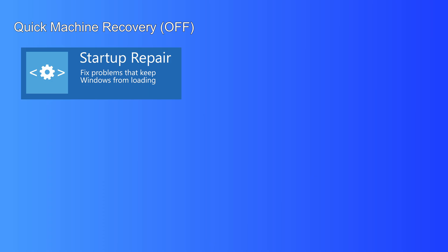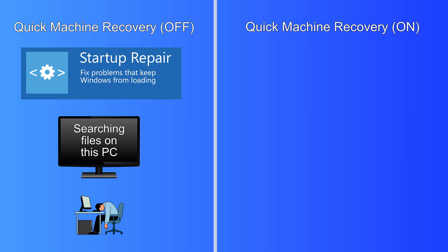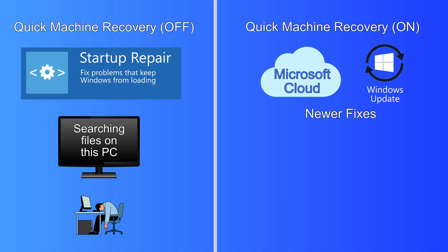So they both sound quite similar. So what's the real difference between Startup Repair and Quick Machine Recovery? Well, with Quick Machine Recovery turned off, Windows Startup Repair is used, which only has access to the files on your computer to try and fix a Windows bootup problem. This can fix problems, but often doesn't, and may leave you feeling frustrated. Whereas with Quick Machine Recovery turned on, it can use the Microsoft Cloud and Windows Update, which have access to newer fixes for bootup problems. Microsoft say that Quick Machine Recovery supersedes Windows Startup Repair and is a much more powerful tool.